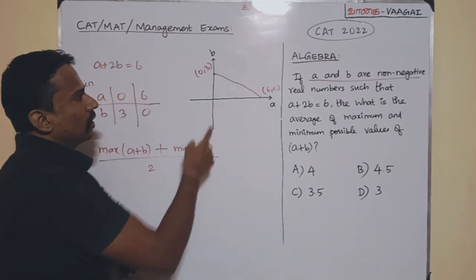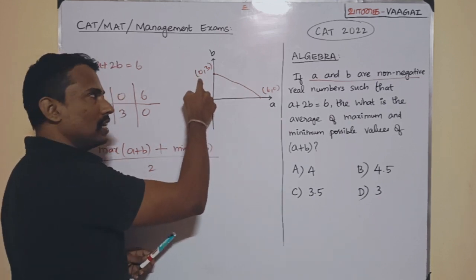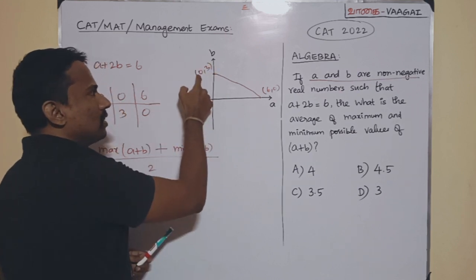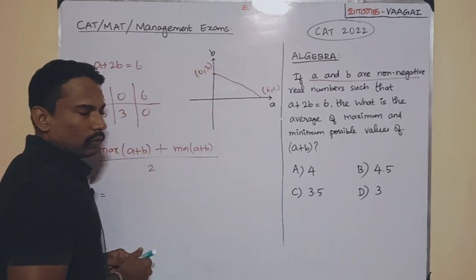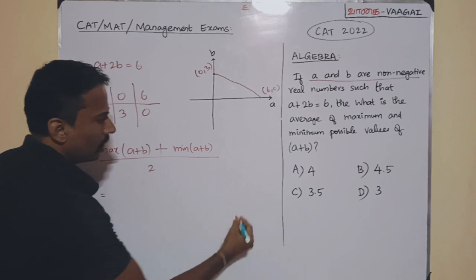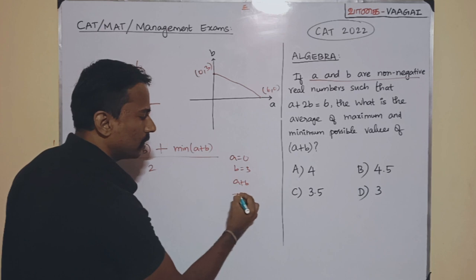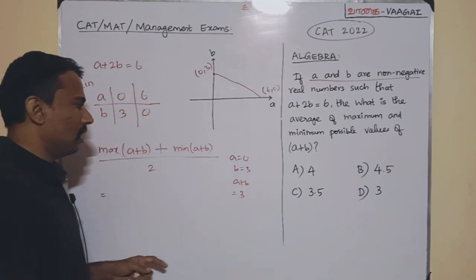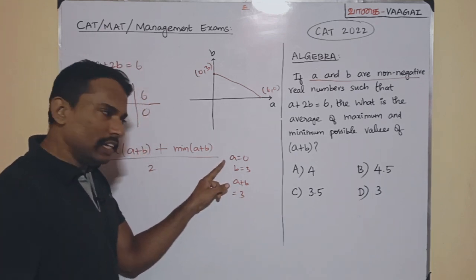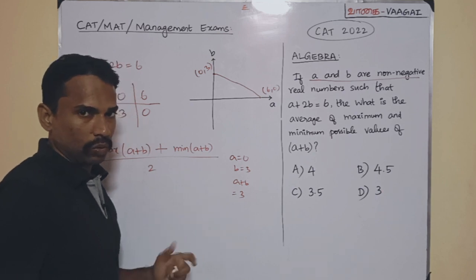Now, see here. Here, what about the point? The point is 0 comma 3, which means A is 0 and B is 3. When you take A is 0 and B is 3. Take A is 0 and B is 3. Now, correspondingly, A plus B will become what? It will become 3. And if you clearly see here, this will be the least value A plus B can take.